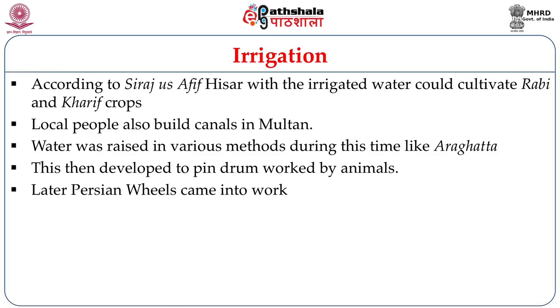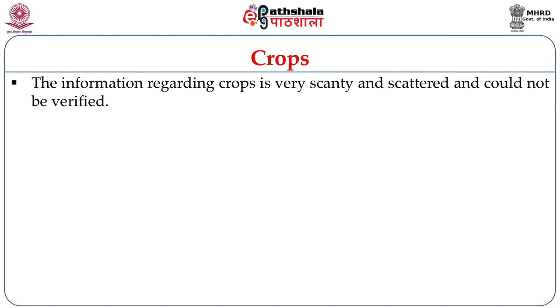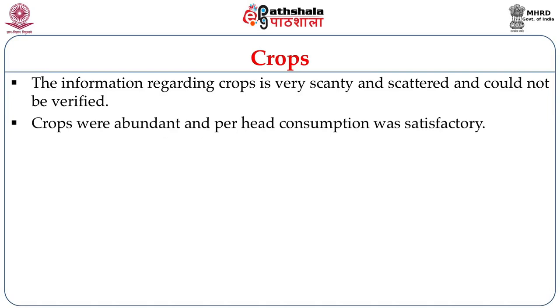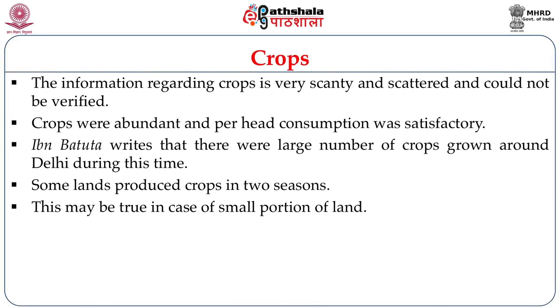Persian wheels came much later but revolutionized the irrigation system. Coming to crops in agriculture, information regarding it is very scanty and scattered with no way to verify them. But it is also true that there was an abundance of crops and per-head consumption was satisfactory. It is believed that per-head consumption during the medieval period somewhat increased. Ibn Battuta writes that there were large numbers of crops grown around Delhi, and some lands produced crops in two seasons, though this may be true only for a small portion of irrigated land.